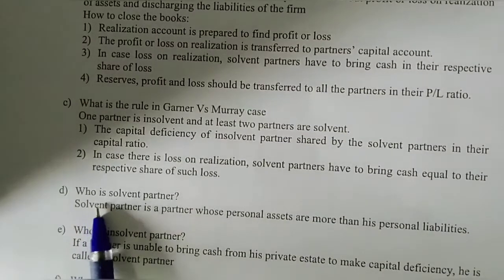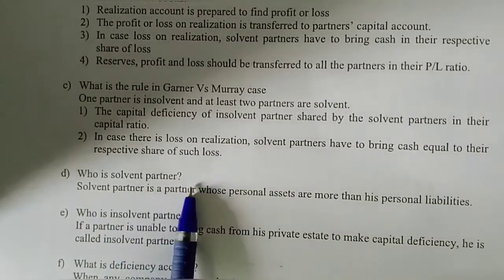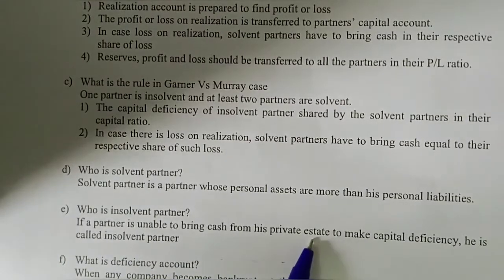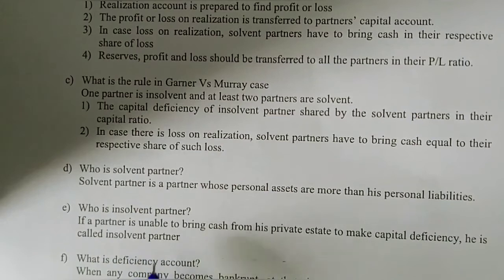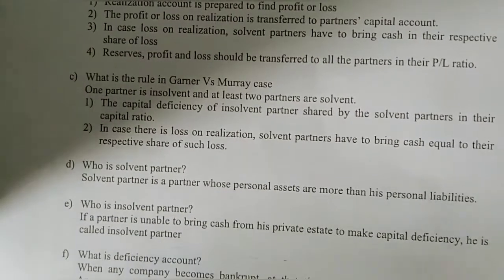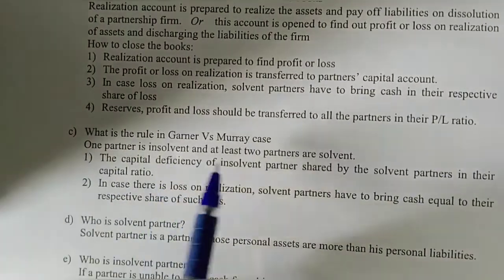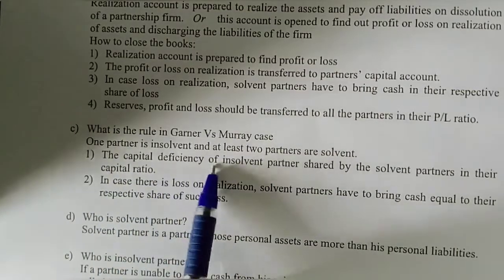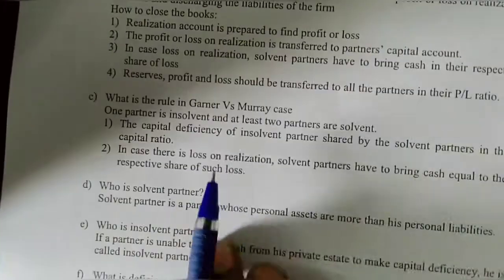Let us understand who is a solvent partner and who is an insolvent partner. A solvent partner is a partner whose personal assets are more than his personal liabilities. An insolvent partner is one who is unable to bring cash from his private estate to make up the capital deficiency. The Garner versus Morrare rule applies when one partner is insolvent and at least two partners are solvent, and the capital deficiency is shared by the solvent partners in their capital ratio.